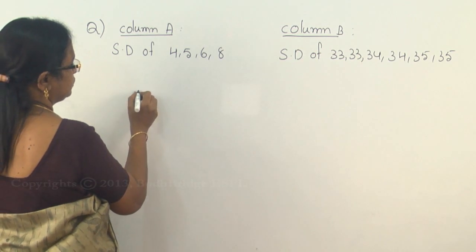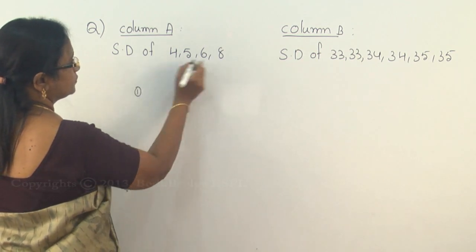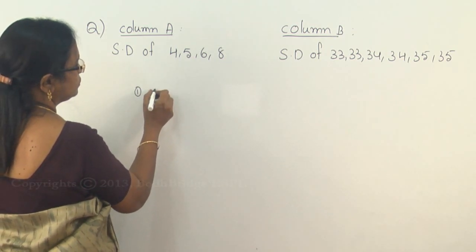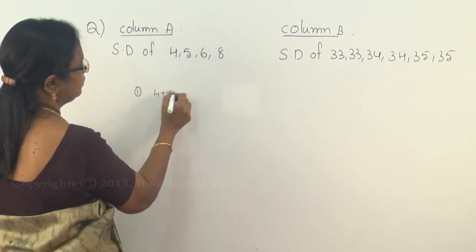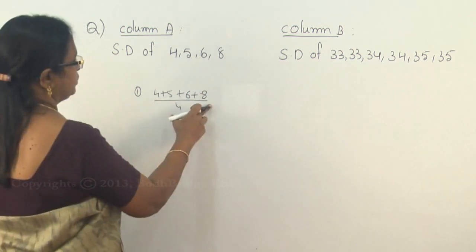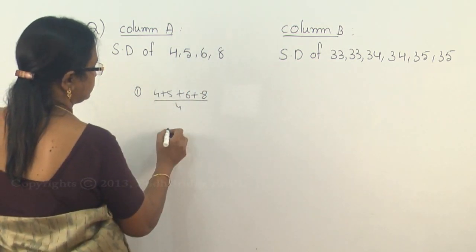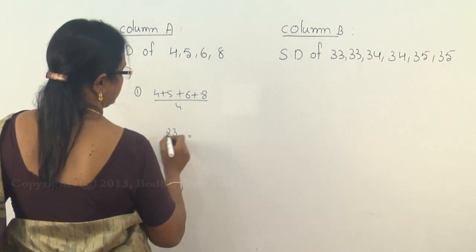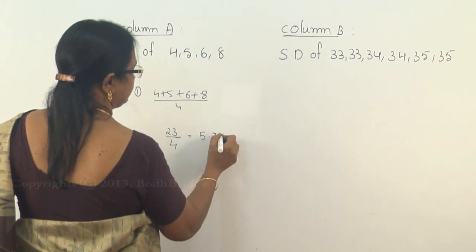How to find the standard deviation? The first condition, rule number one, is first find the mean of the values. So 4 plus 5 plus 6 plus 8 divided by 4, 12, 18, 23 by 4. It is 5.75.